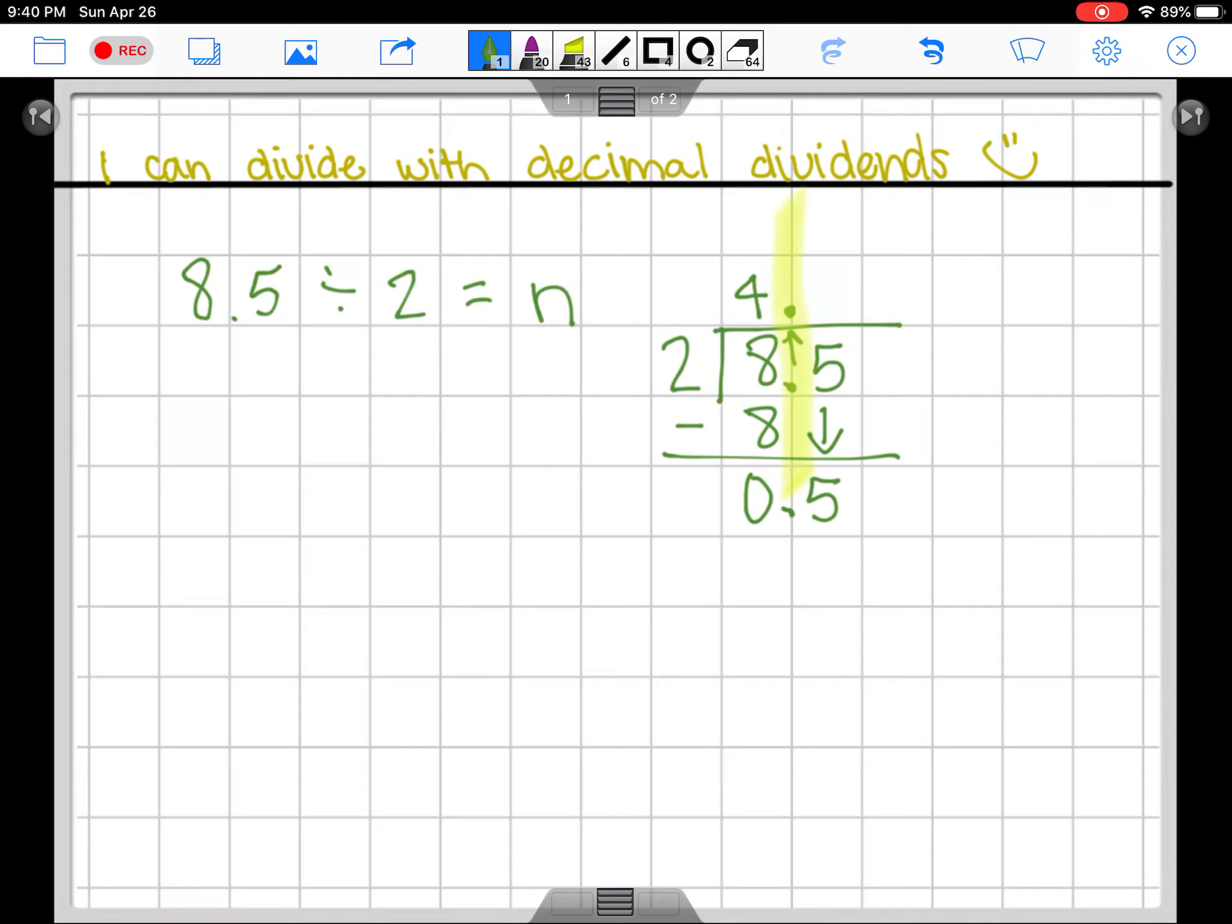But we're going to drop down our five, which is secretly five tenths. Two can fit into five how many times? We can count by twos: two, four, six. We can't go above five, so it's going to be two times. Two times two is four. Subtract.